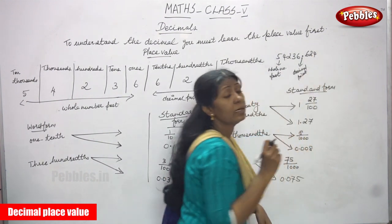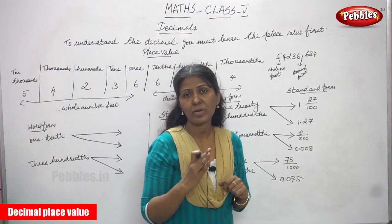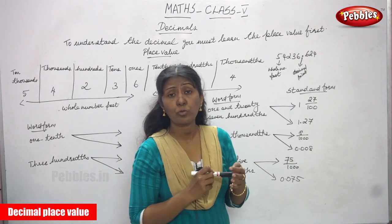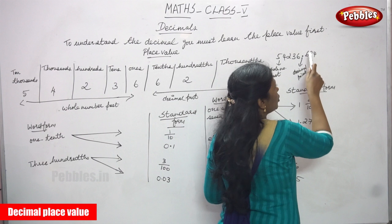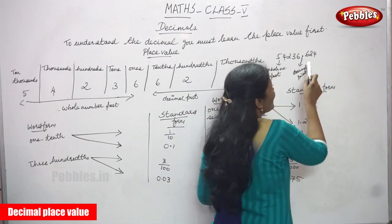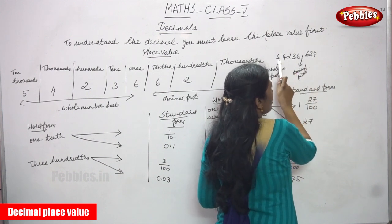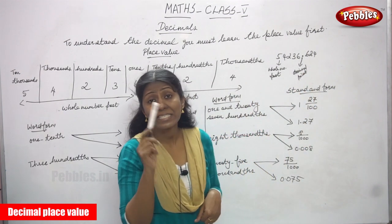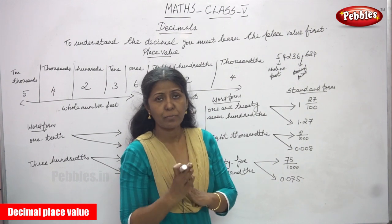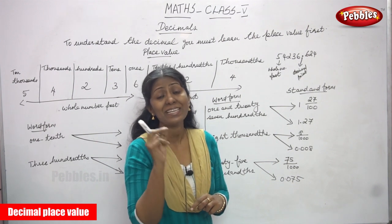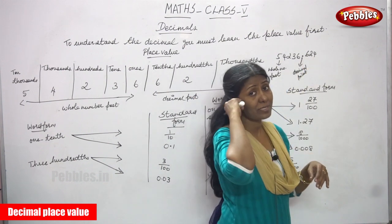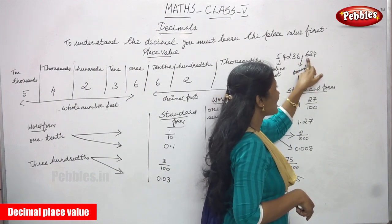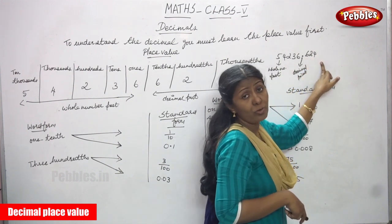After the point, you should not say '624' as six hundred twenty-four. After the decimal point, you must say each digit individually: 6, 2, 4. That is 6 tenths, two hundredths, and four thousandths. So the full number is 54,236.624 — where 624 means 6 tenths, two hundredths, and four thousandths. Only after the decimal point do you say the digits individually.